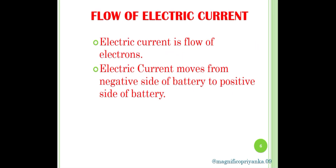Next is flow of electric current. Electric current moves from the negative side of the battery to the positive side of the battery. However, in a circuit diagram, it is represented that electric current flows from the positive end to the negative end. This is because when electricity was first discovered, the existence of the electron was not known.